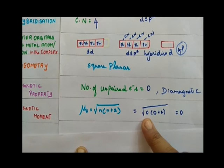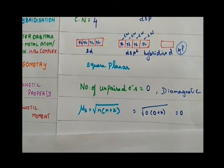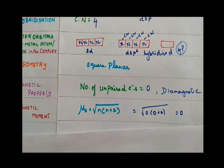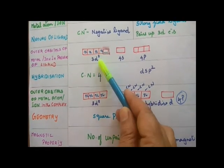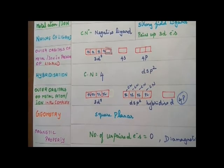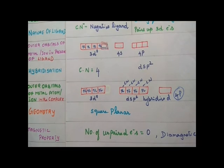The spin-only magnetic moment formula is: μₛ = √(n(n+2)) BM. The number of unpaired electrons is zero, so the value is zero. This complex is diamagnetic. Illustrations 3 and 4 will continue next — definitely important board exam questions. The configuration is 3d⁸. Thank you — please comment, share, and check the description.